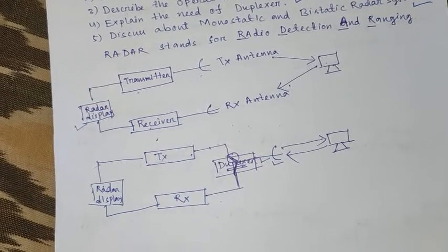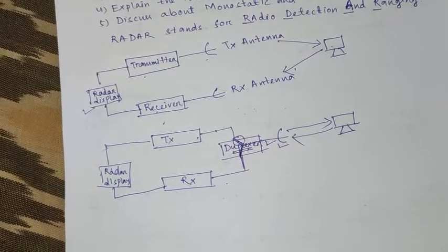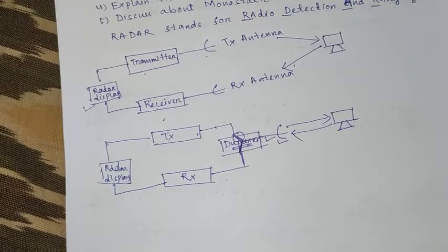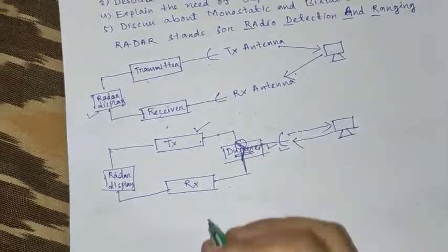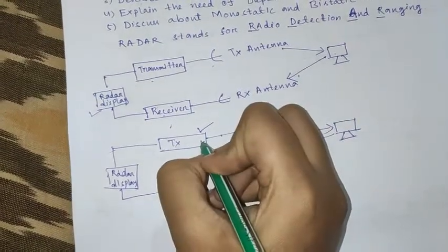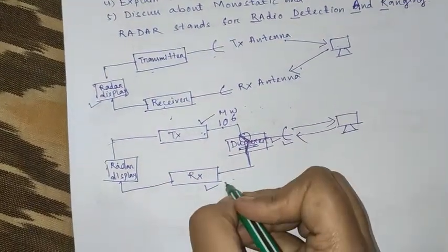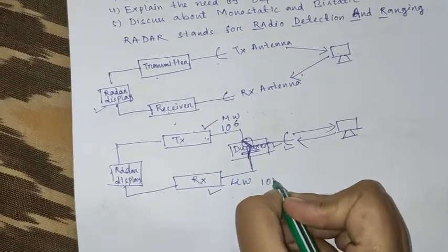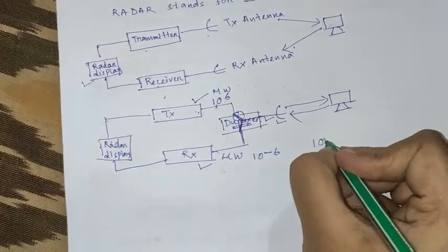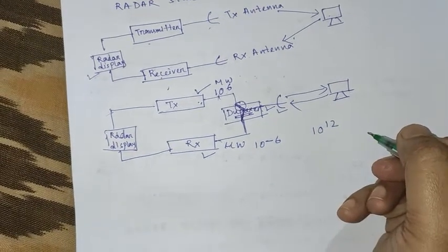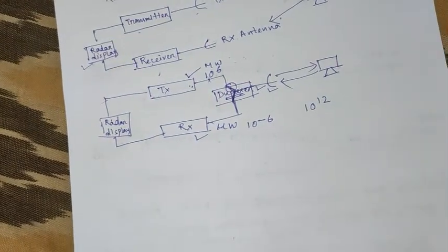The duplexer is an electronic device that allows bi-directional communication over a single path. The duplexer is generally used to isolate the receiver from the transmitter. Why? Because the transmitter operates in high power and the receiver operates in low power. The transmitter operates in terms of megawatt, 10 to the power 6, and the receiver operates with microwatt, 10 to the power minus 6. The difference between them is 10 to the power 12. So it is very necessary to protect the receiver circuit from the transmitter high power circuit, for which duplexer is used.